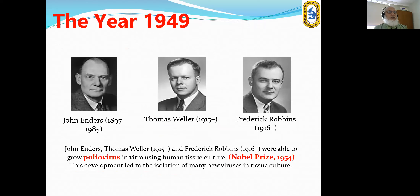In 1949, John Enders, Thomas Weller, and Frederick Robbins were able to grow poliovirus in vitro using human tissue culture, and they received the Nobel Prize in 1954. This development led to the isolation of many new viruses in tissue culture.